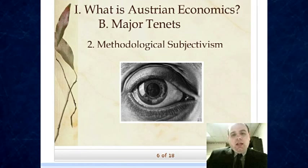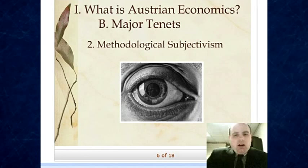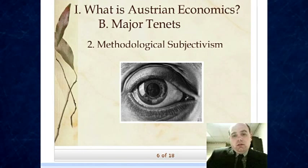Most modern schools of thought, including the neoclassical mainstream, also have a subjective theory of value. Paul Krugman, for example, would be a methodological subjectivist in the narrow sense. But the Austrians push it much further - especially when it comes to the capital structure, where the very categories used always go back to people's subjective understanding of the situation. The Austrians push subjectivism more completely than other economists, even those who claim to believe in the subjective theory of value.